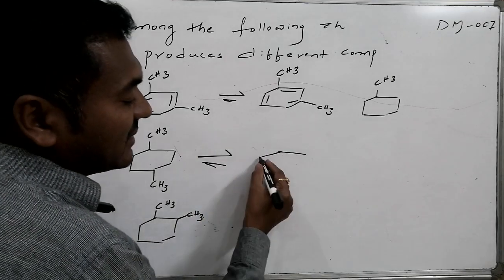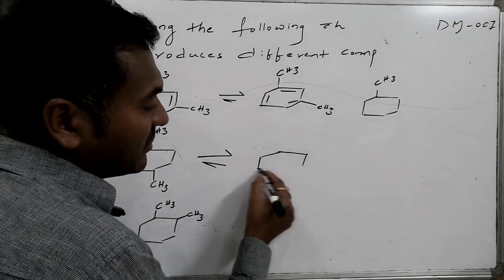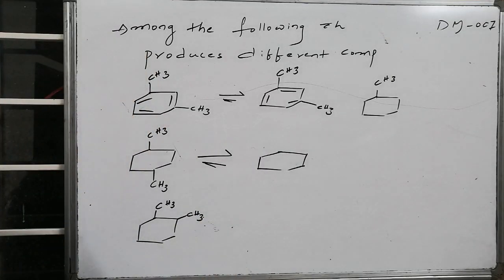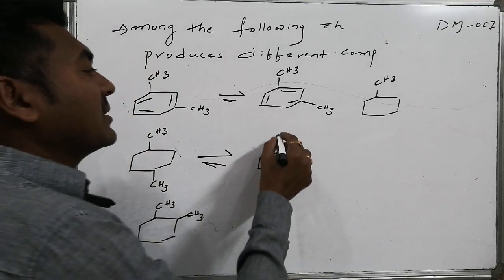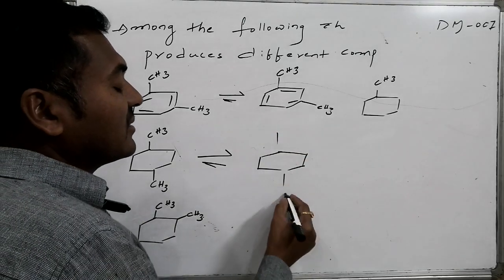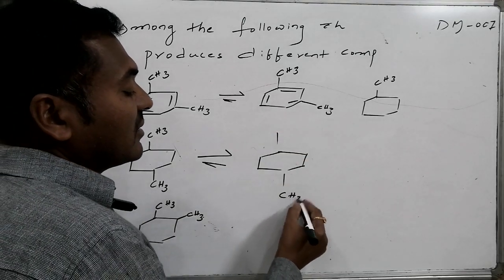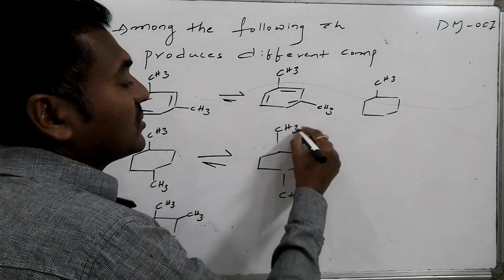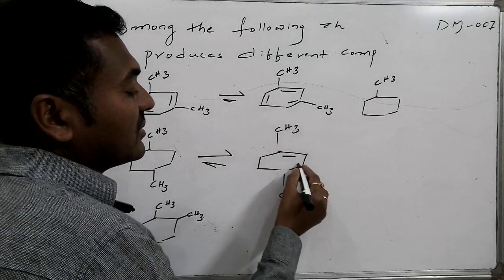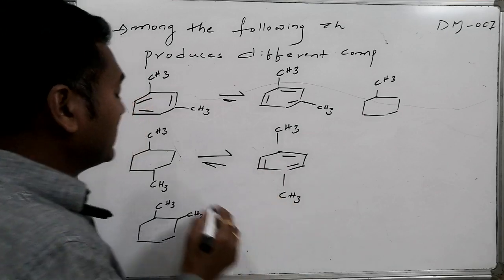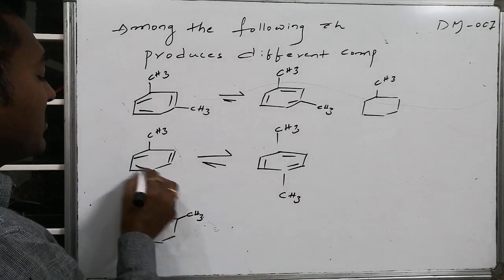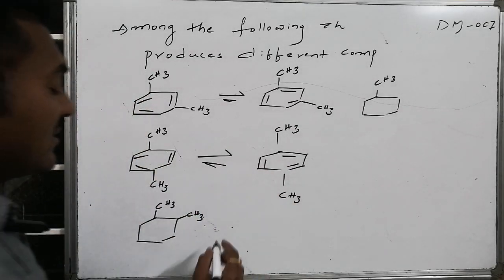Similarly, for para-dimethylbenzene, if we write the Kekulé structures, there are two possible arrangements of the double bonds within the ring.